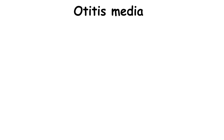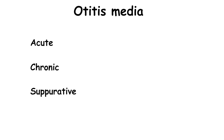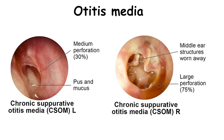There are several types of otitis media: acute, chronic, and suppurative. In the suppurative form, you can see pus and mucus in the eardrum. Antibiotic and anti-inflammatory medications are used to reduce pain and infection, and sometimes tympanostomy, or placing an ear tube, is performed for recurring infections.